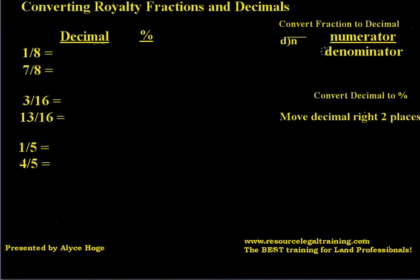In this case for 1/8, for example, the numerator is 1 and the denominator is 8. So it's going to be 8 goes into 1 to determine what that decimal is. Once we have that decimal, to convert it to a percent, all we have to do is move the decimal place over to the right two places.